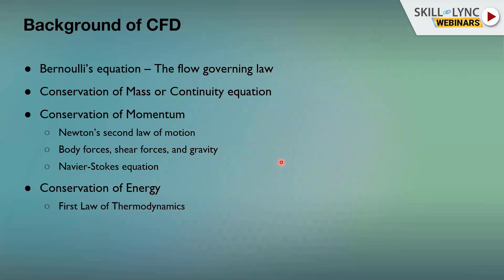A simple example could be a moving car on the road — we cannot see the air around the car but we see the drag, heat transfer, and the plume path. All these things are based on certain laws and protocols: the Bernoulli's equation, which is a flow governing equation, then the continuity equation, the conservation of momentum — which is basically a form of Newton's second law, where we consider all body forces, shear forces, and gravitational forces. All this combination goes into the backbone of CFD, which is the Navier-Stokes equation.